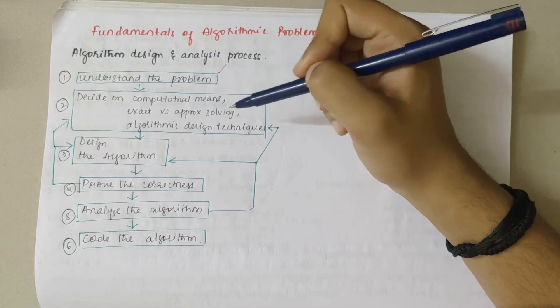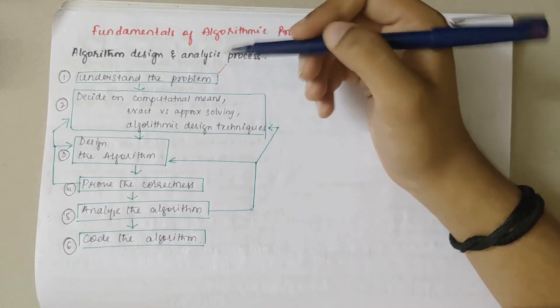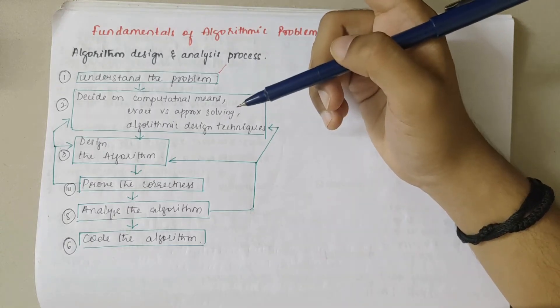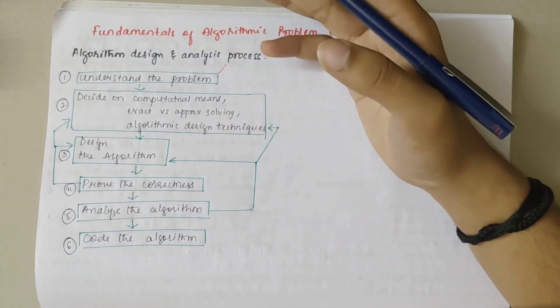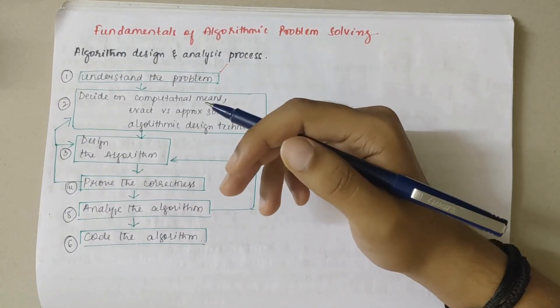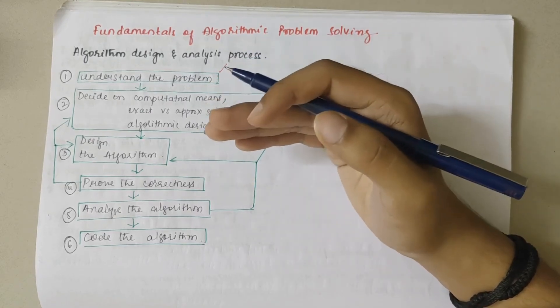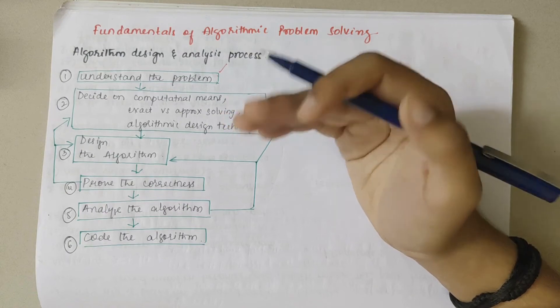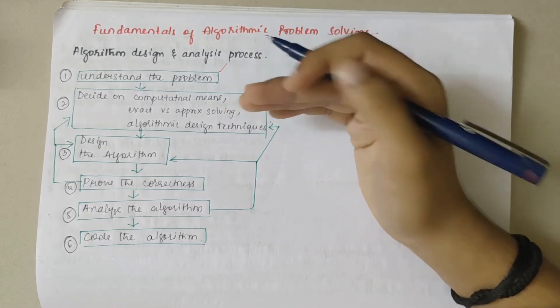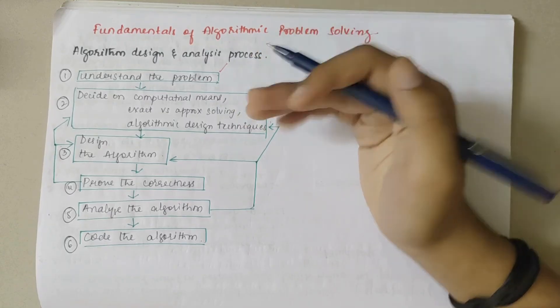Then we come to the second part - discussing the computational means: exact versus approximate solving and algorithm design technique. Once we understand the problem, we need to look into the appropriate model which could be selected for solving the problem. Along with that, we have choosing between solving the problem exactly and solving it approximately, because there are important problems that simply cannot be solved exactly. Then deciding on the algorithm design techniques - there are many techniques or strategies which could be followed.